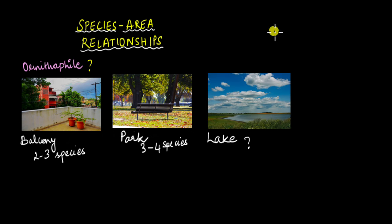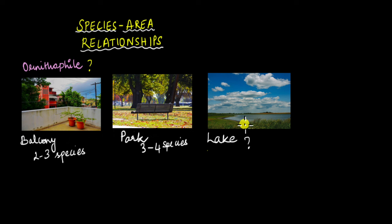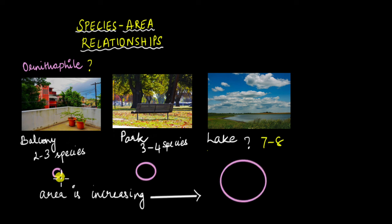When she visits a huge lake far from her house, how many species would she observe? Going by the trend — two to three from the balcony, three to four from the park — it makes sense that at the lake she would observe much higher numbers, around seven to eight species or even more. This tells us that as the area increases, the number of species observed also increases. That is what is given by the species-area relationship, which is what we're going to talk about in this video.